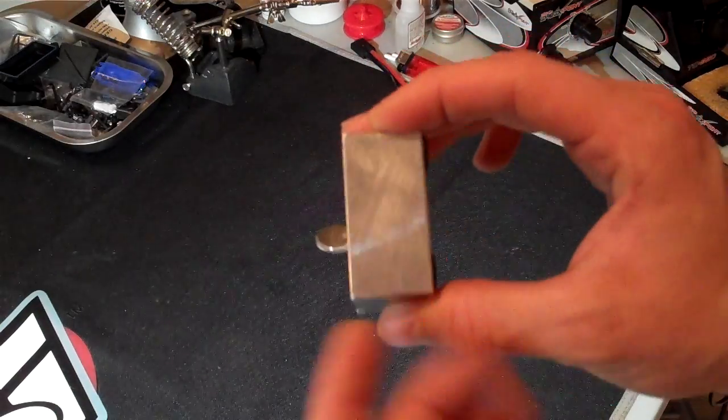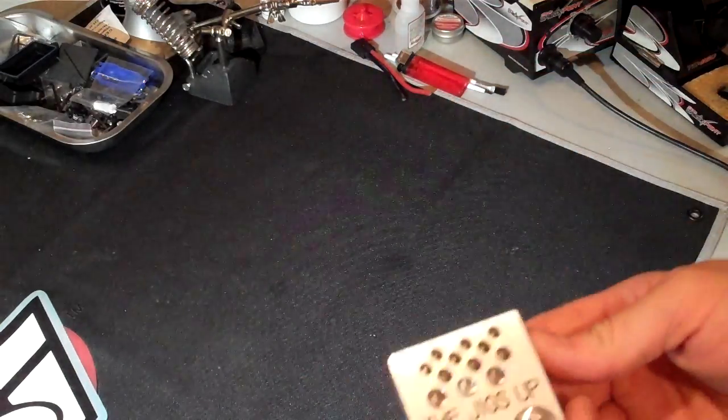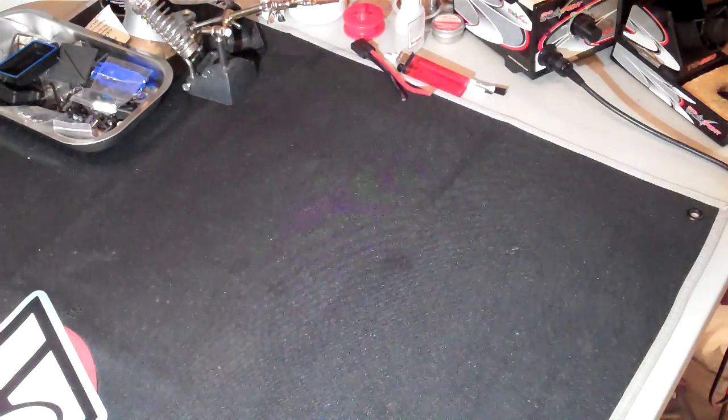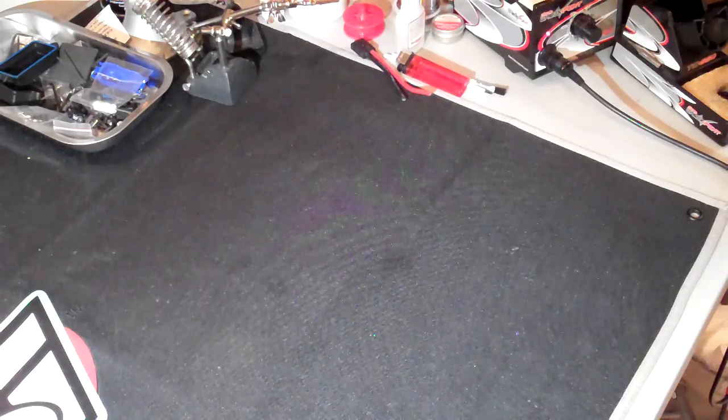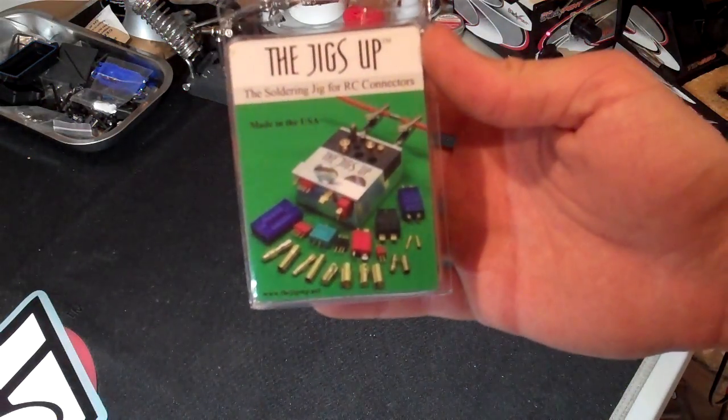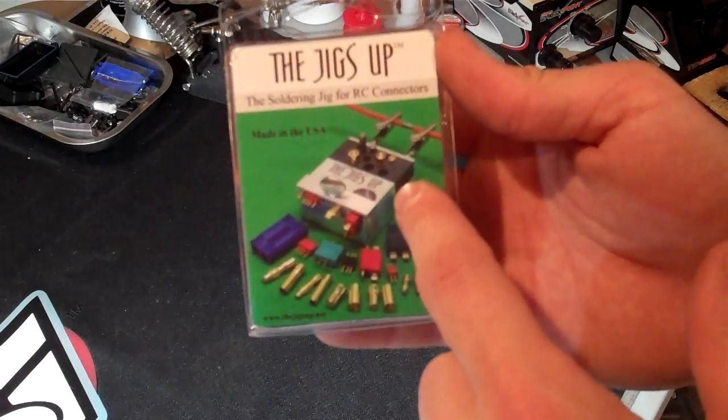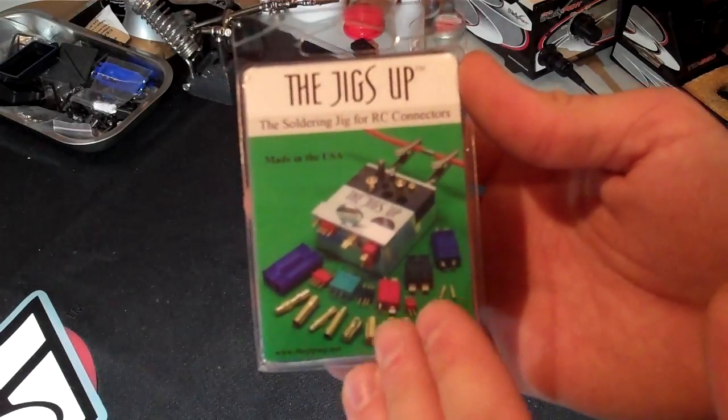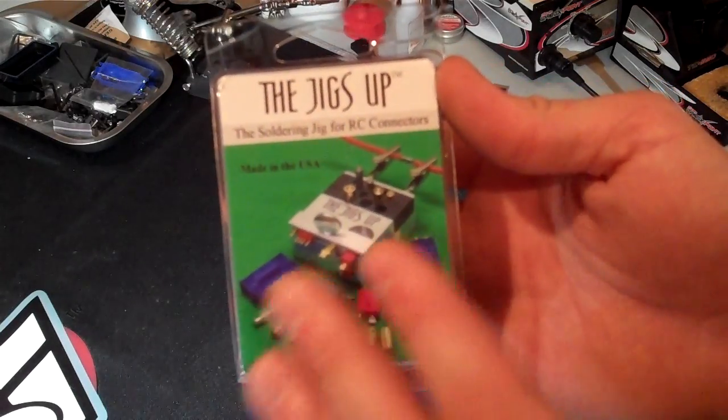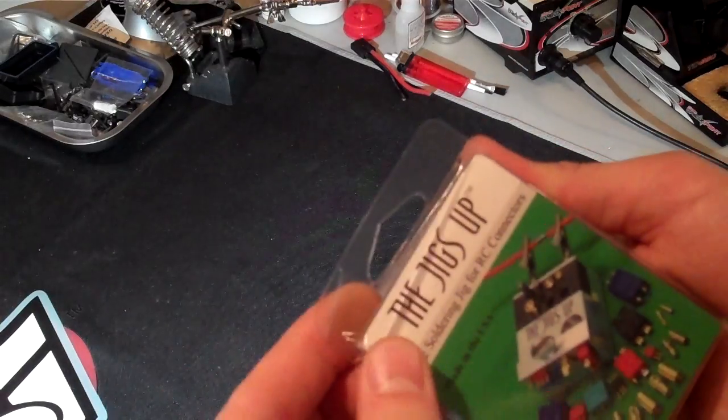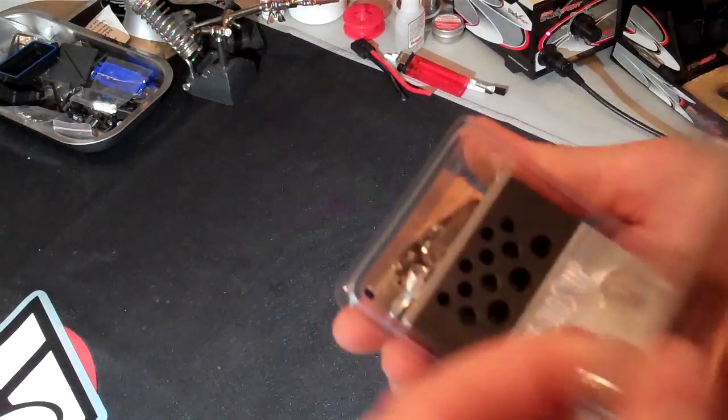So I was looking online about a week ago and I saw the new Jigs Up. Here it is, the new improved version. What they have added now is a heat-resistant block that does not draw heat but can take quite a bit of heat and not ruin your soldering. What I was having with the old one is it would just draw too much heat and I wouldn't be able to heat up the bullet connectors like I would like.